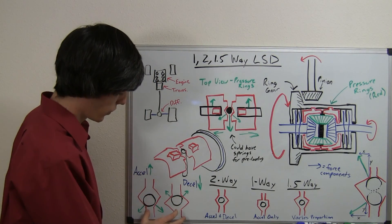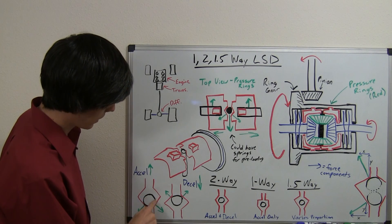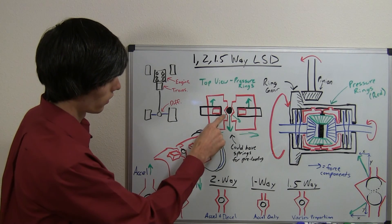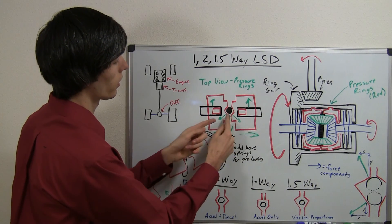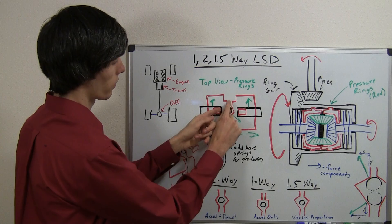So, this is a two-way here, and that's based on the design of these pressure rings. So like we've got going on here, when you accelerate, pushes them out. When you decelerate, the pinion shaft goes up and pushes these out so they can press.